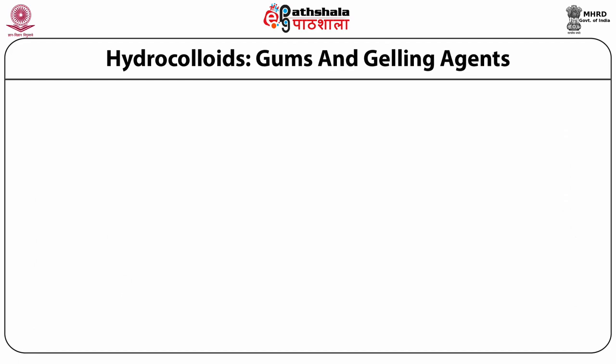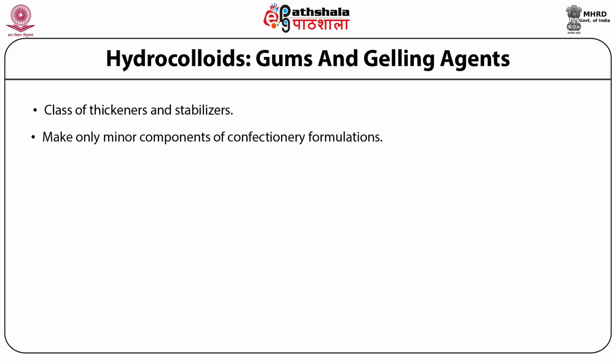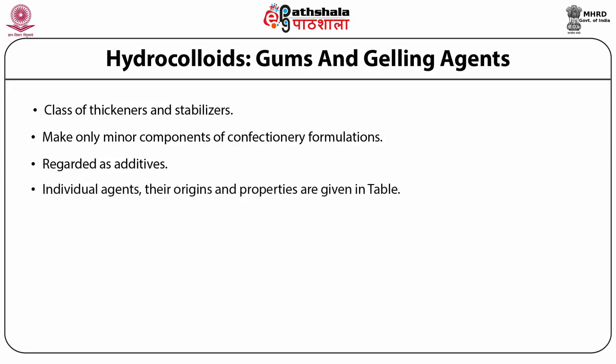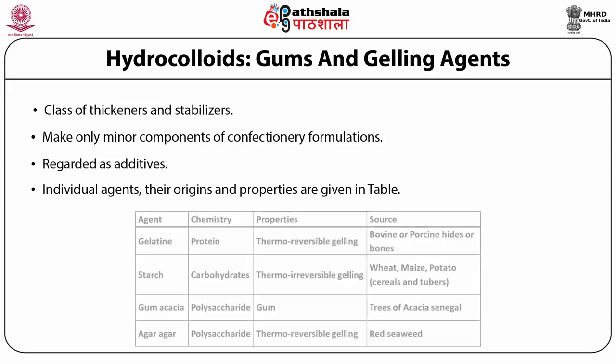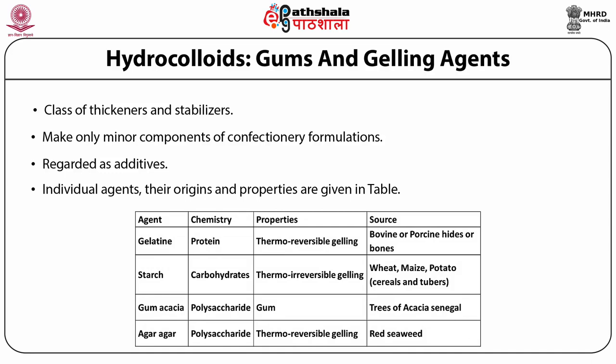Hydrocolloids, gums, and gelling agents also fall under the class of thickeners and stabilizers. Some make only minor components of confectionery formulations and are regarded as additives, while others are used in large quantities and regarded as ingredients. The individual agents, their origin, and properties are explained in a table. Gelatin is a thermoreversible gelling protein extracted from bovine or porcine hides and bones. Starch is a thermoreversible gelling carbohydrate extracted from wheat, maize, potato, or other cereal and tuber starches.